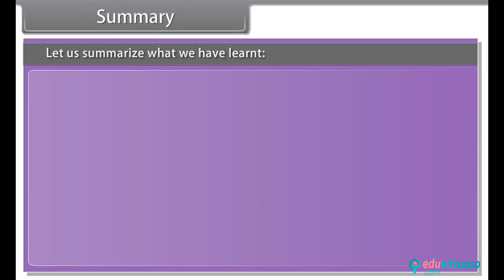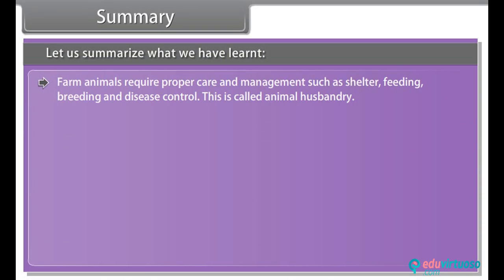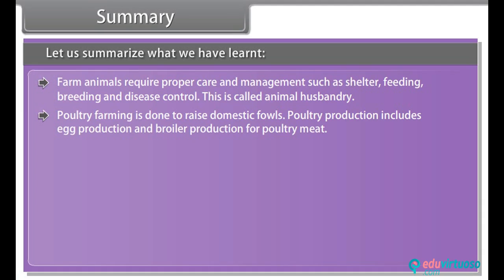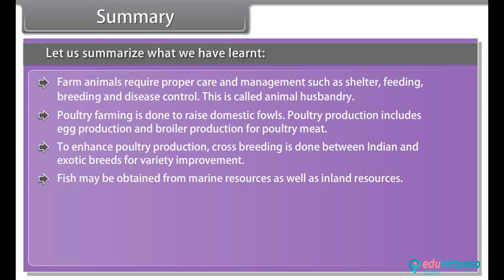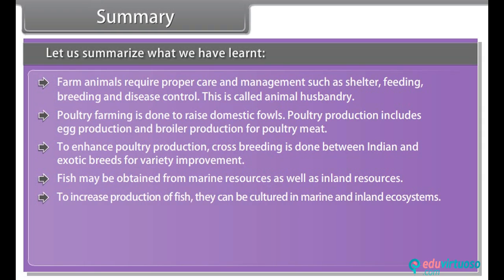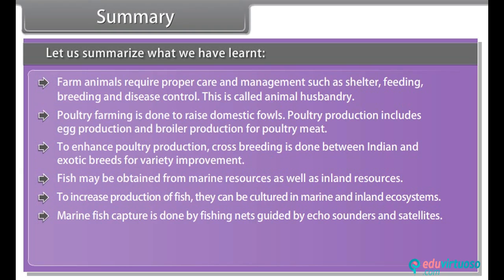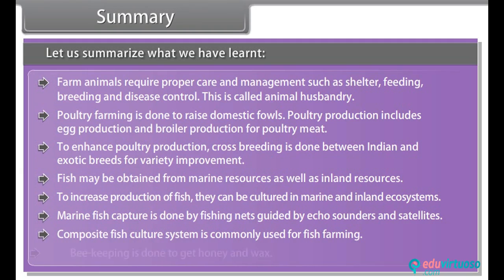Farm animals require proper care and management such as shelter, feeding, breeding and disease control — this is called animal husbandry. Poultry farming is done to raise domestic fowl; poultry production includes egg production and broiler production for poultry meat, and cross-breeding between Indian and exotic breeds is done for variety improvement. Fish may be obtained from marine or inland resources and cultured in both ecosystems; marine fish capture uses fishing nets guided by echo sounders and satellites. Composite fish culture systems are commonly used for fish farming. Beekeeping is done to obtain honey and wax.